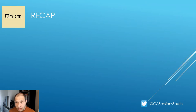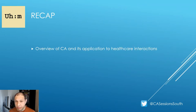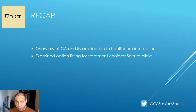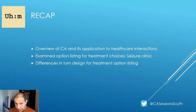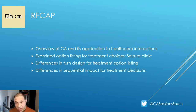Just to recap what we covered in the last session: we looked at CA and its application to healthcare interactions. We examined the practice of option listing for treatment choices in a seizure clinic. We discussed the differences in turn design for option listing, and how different option listing strategies led to different sequential outcomes.